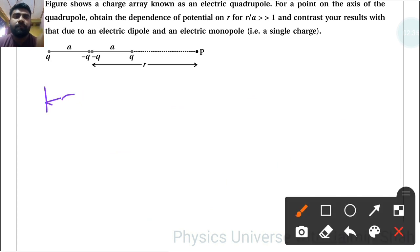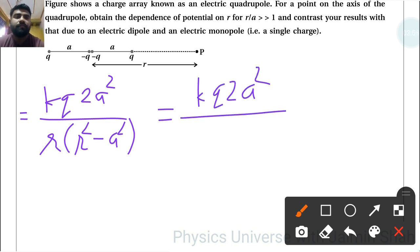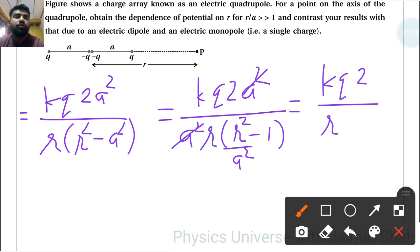From this formula, if I subject from the denominator, if I common A square, so KQ into 2A square upon A square common, R into R square minus 1. So R square, A square, I have to write here R square upon A square. A square, A square get cancelled out, so now KQ 2 upon R cube upon A square minus 1.